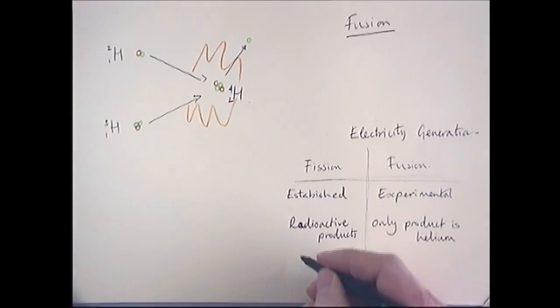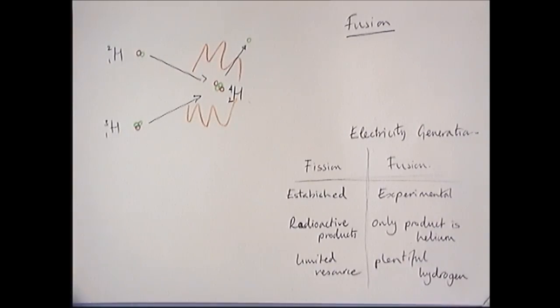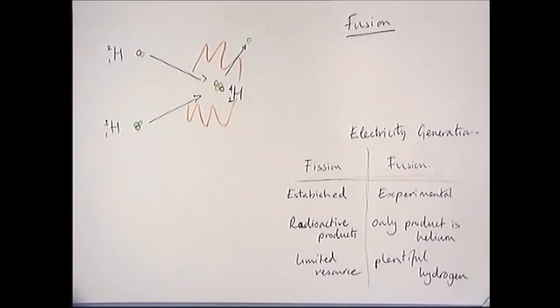Also, fission is a non-renewable resource. There's only limited amounts of uranium and plutonium. Whereas the resource for fusion is hydrogen. There's loads of hydrogen on Earth, so if not completely renewable, it is certainly abundant. Very brief summary then: just remember that fission is the splitting of large nuclei into small nuclei, and that fusion is the joining of small nuclei into larger nuclei. Thank you very much for listening. I hope that helped.